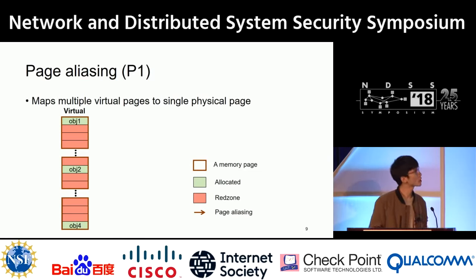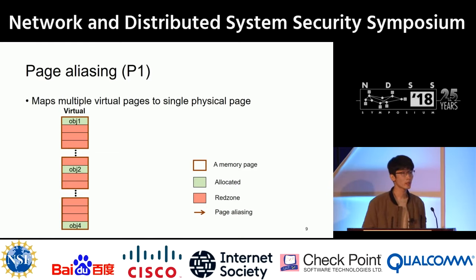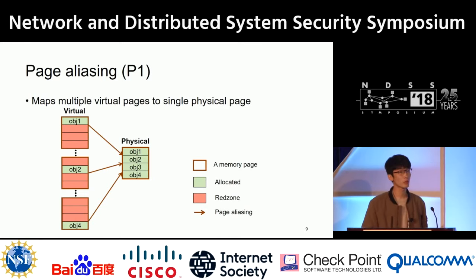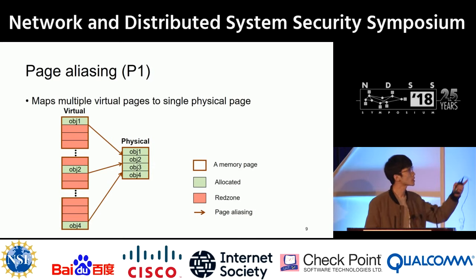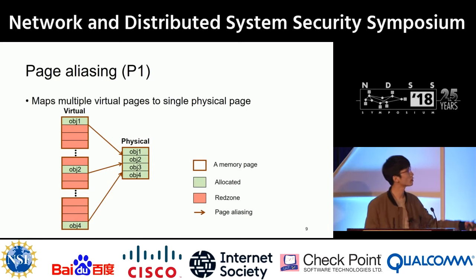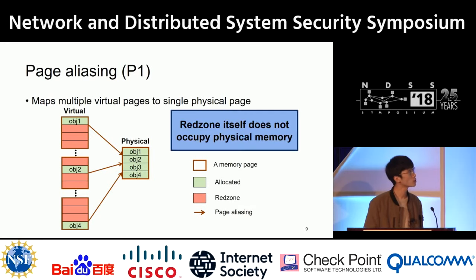To support large gaps between objects, we use page aliasing, which maps multiple virtual pages to a single physical page. We use at least one virtual page per object. With page aliasing, objects can be compactly placed in physical memory while being sparse in virtual memory. So the red zone itself does not occupy any physical memory.